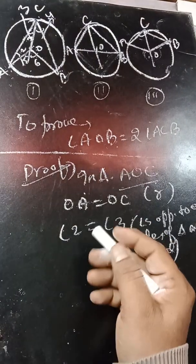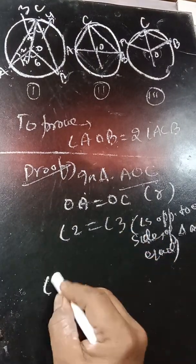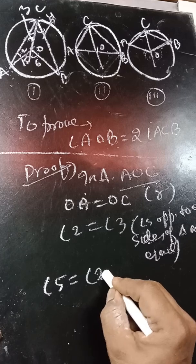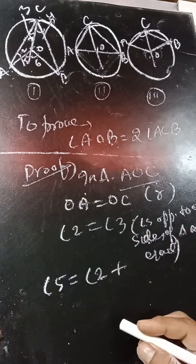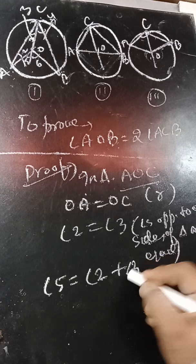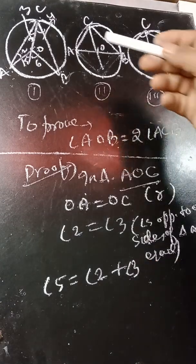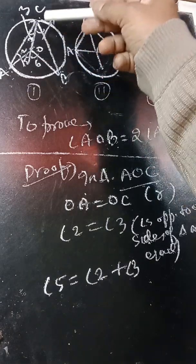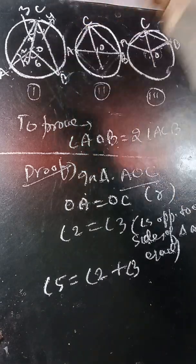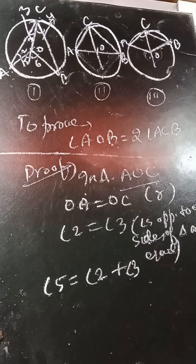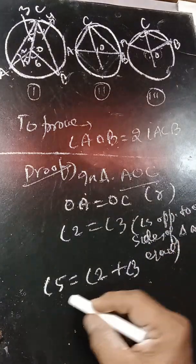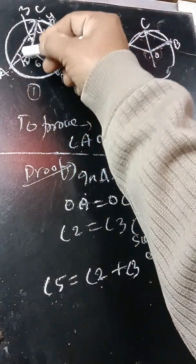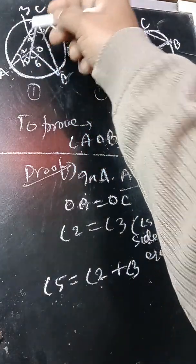Now, angle 5 is equal to angle 2 plus angle 3, by the exterior angle property. Note: by mistake the angles are labeled starting from 2 — this is angle 2, this is angle 3, angle 4, angle 5, and angle 6. So angle 5 equals angle 2 plus angle 3, by the exterior angle property.